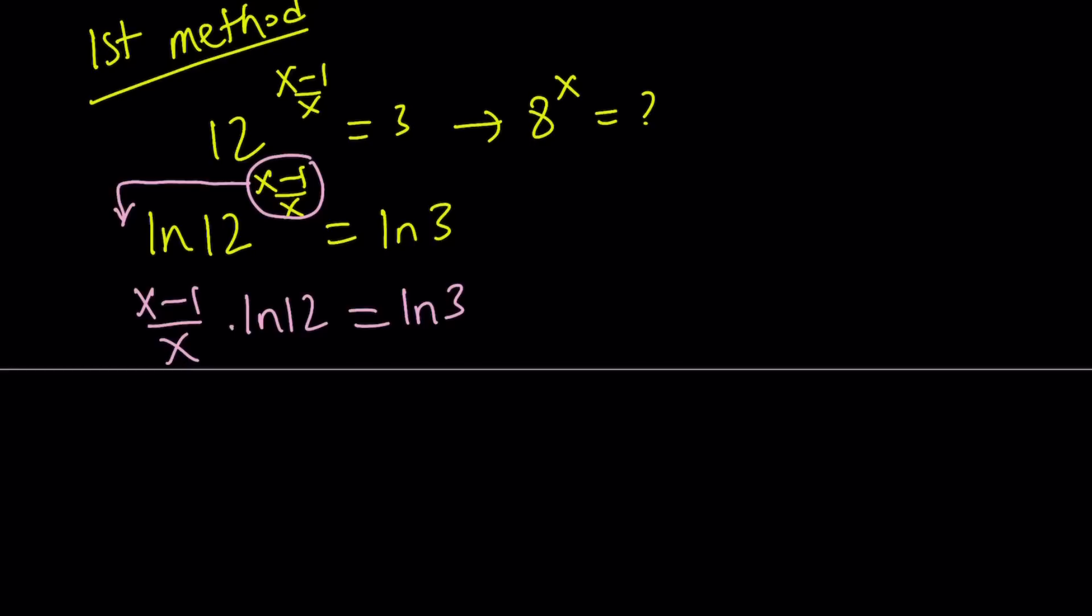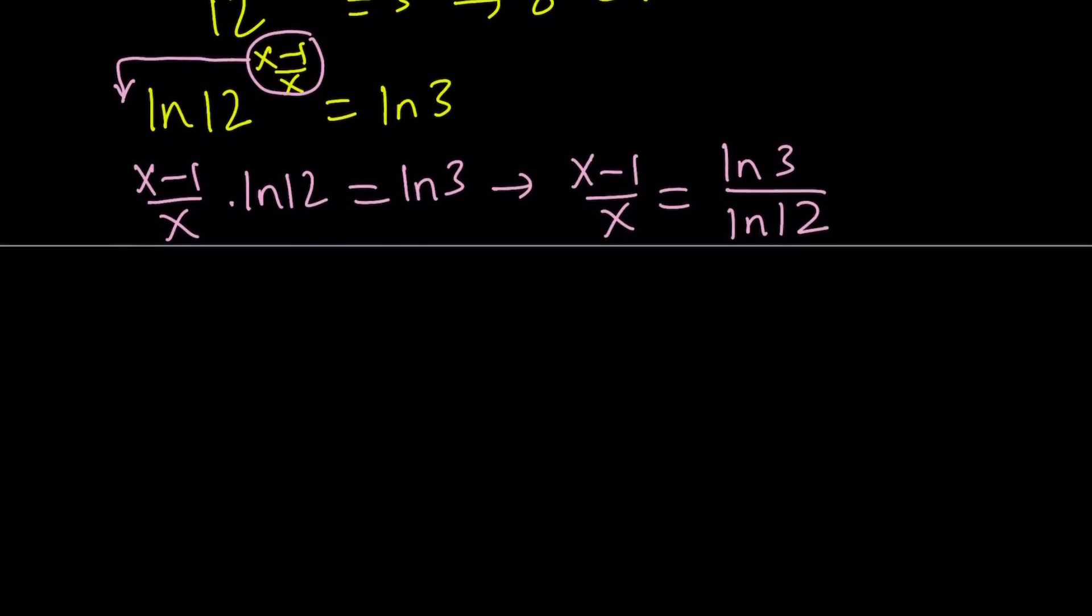Let's divide both sides by ln 12 first. From here we can do cross multiplication. If you multiply x minus 1 by ln 12, you get x ln 12 minus ln 12, and that equals x times ln 3.